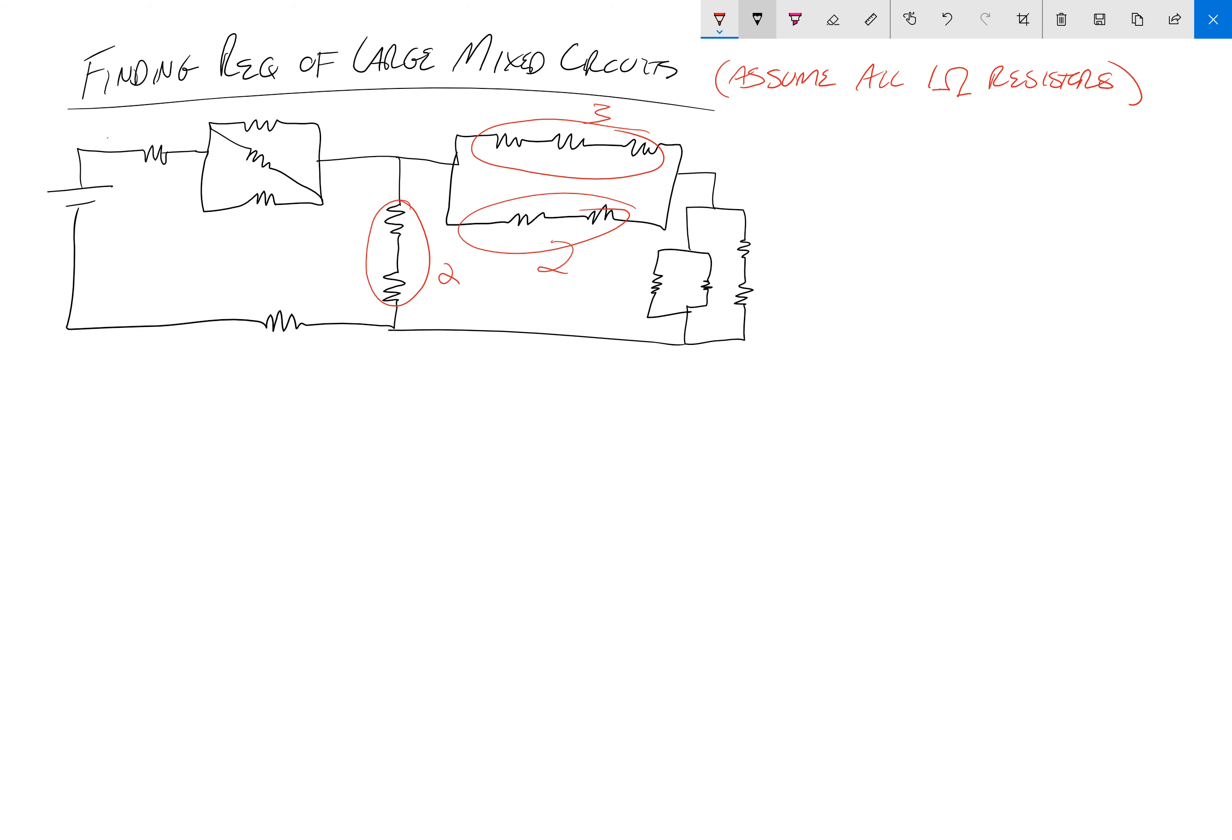Some of it goes around this way, some of it goes up here, but then some of it splits again. So basically these three are in parallel, and parallel we do 1 over (1/1 + 1/1 + 1/1) equals 1/3.